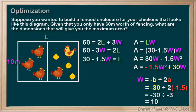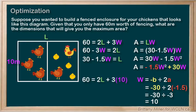Now, how can we find the length? We have to look at our constraint again. Now that we know W is 10, we have 60 equals 2L plus 3 times 10, so 30 equals 2L, so L is going to be 15. That means the length will be 15 meters, giving us a 10 meter by 15 meter enclosure for the maximum area.